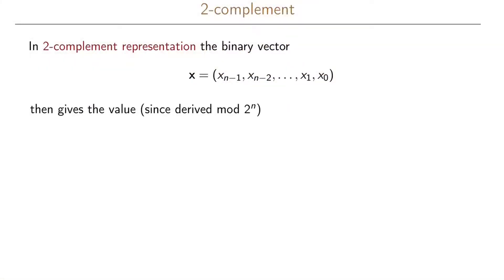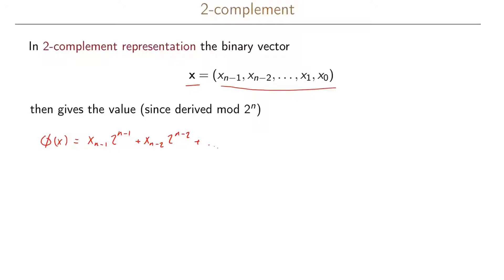In order to handle negative numbers, we're going to use the two's complement representation. The binary vector x, given as x_{n-1}, x_{n-2}, down to x_0, gives a value via the phi function: phi(x) = x_{n-1} times 2^{n-1} plus x_{n-2} times 2^{n-2}, and so on, until we have x_1 times 2 plus x_0.